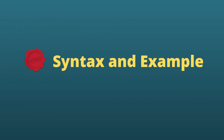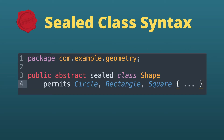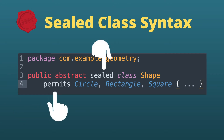Now let's check the syntax and example of writing a sealed class. A new 'sealed' keyword and a 'permits' keyword are introduced for this feature. After 'permits' we can give a list of classes which are permitted to extend our sealed class.